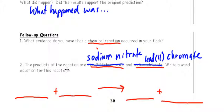And then over here, number two, the products of the reaction are sodium nitrate and lead to chromate. What's the word equation that illustrates the reaction in this lab? Okay? So, fairly straightforward.